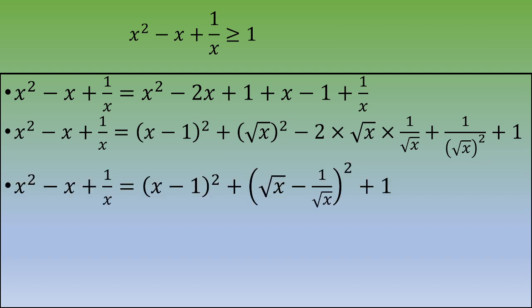So we end up with x squared minus x plus 1 over x equals x minus 1 squared plus square root of x minus 1 over square root of x squared plus 1.